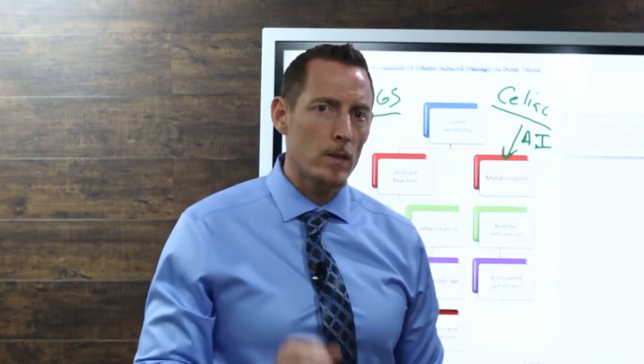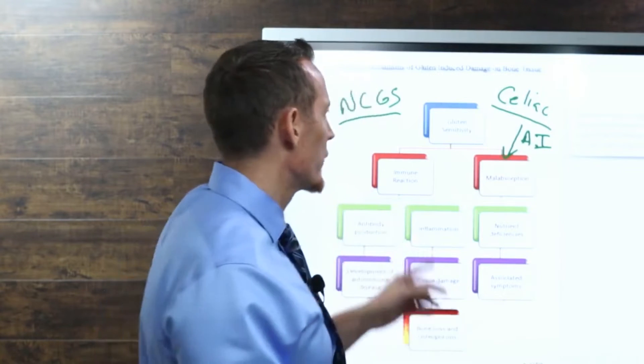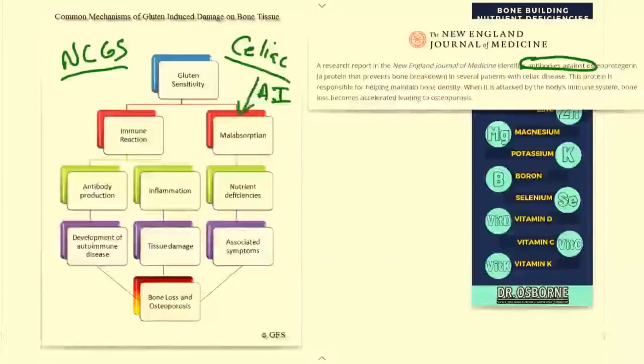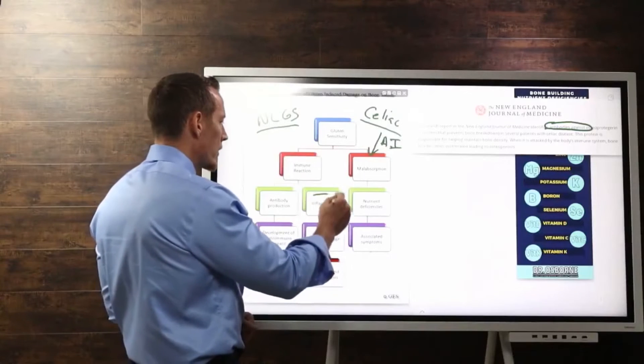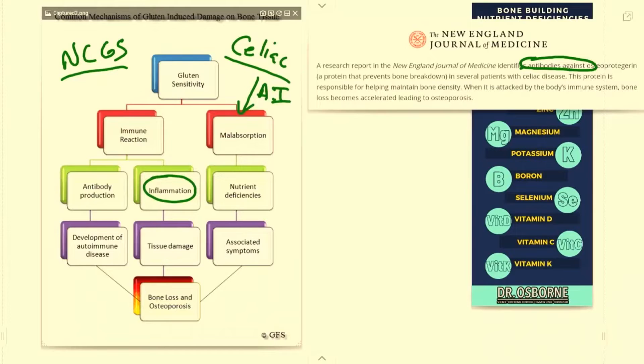We know that gluten creates malabsorption, it can create an immune response, and it can also directly cause inflammation. Gluten-induced inflammation in and of itself—chronic inflammation—can damage your tissue and lead to lost resources. Why does inflammation cause bone loss?